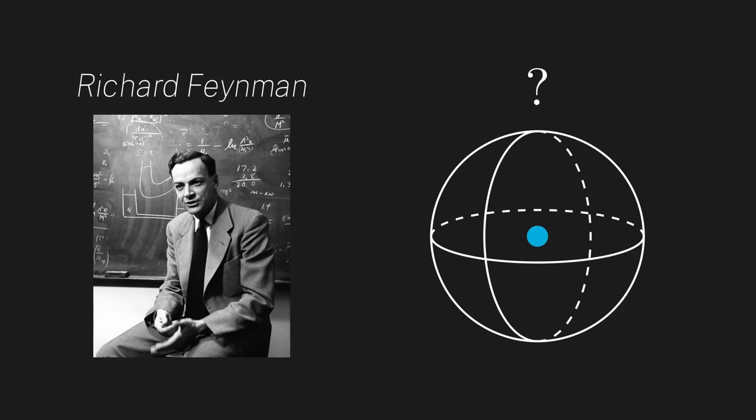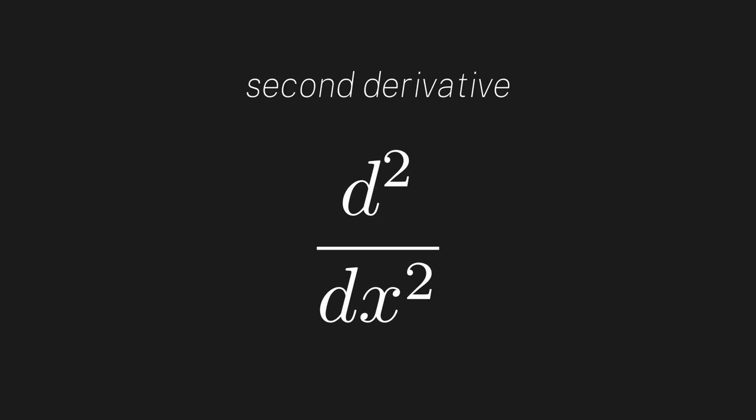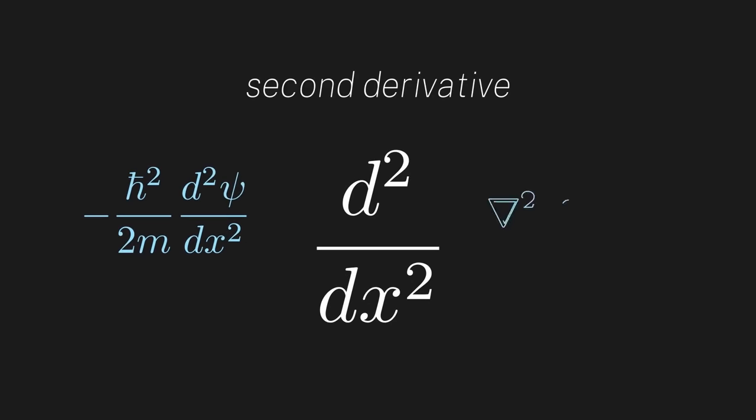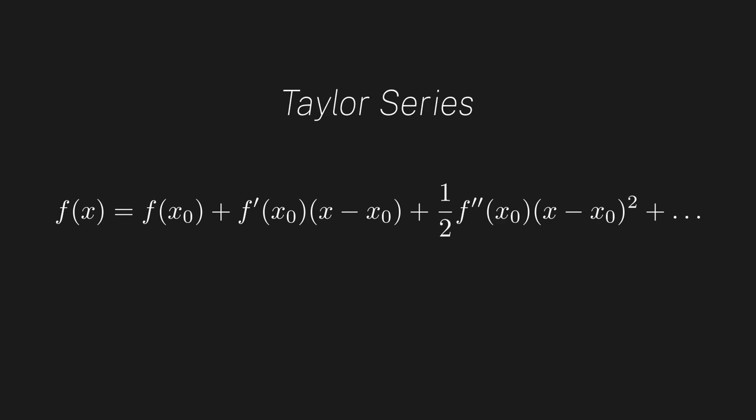In this video, I want to really dive into what Feynman is talking about here, and in the process we'll develop a deep intuitive understanding of what the second derivative really does in math and physics — and why it shows up in the Schrödinger equation, electromagnetism, and elsewhere. As a heads up, I'll assume you have some familiarity with Taylor series, insofar as you know that we can expand a function as such.